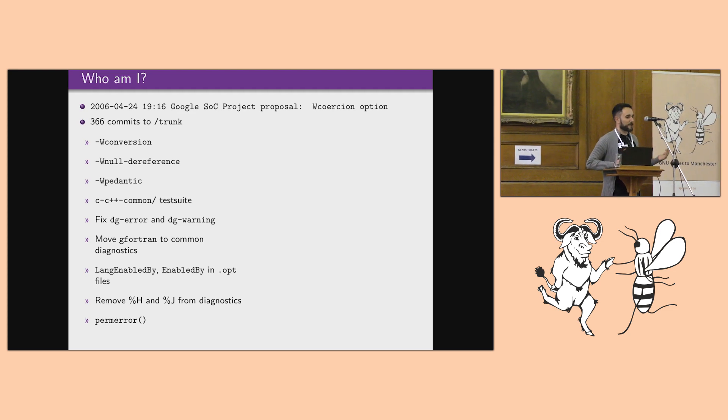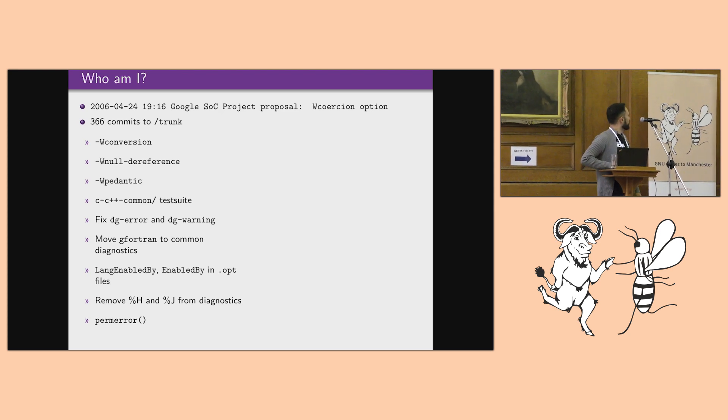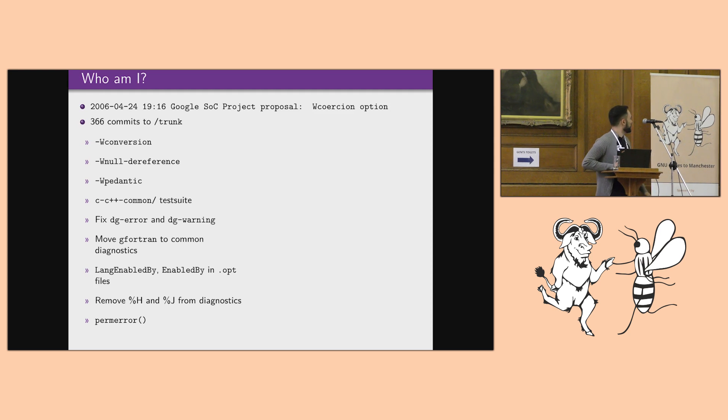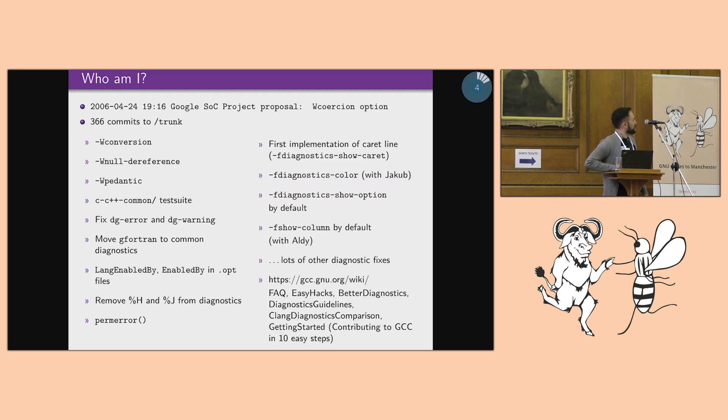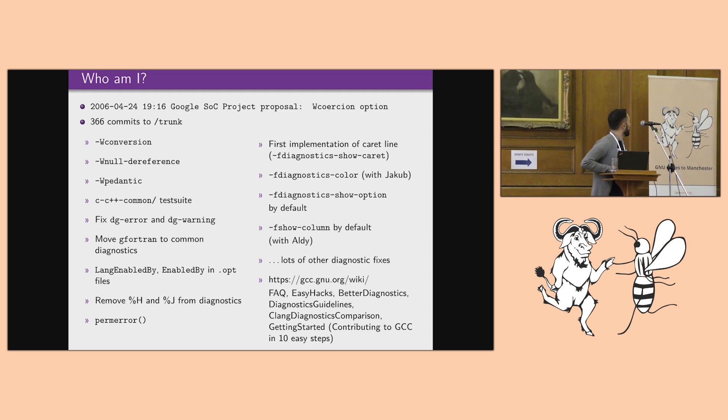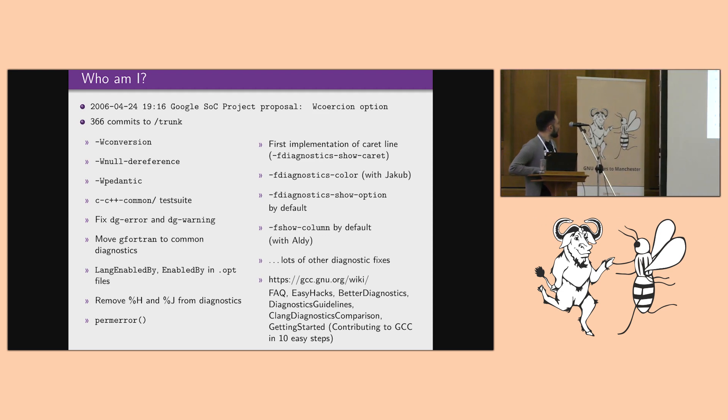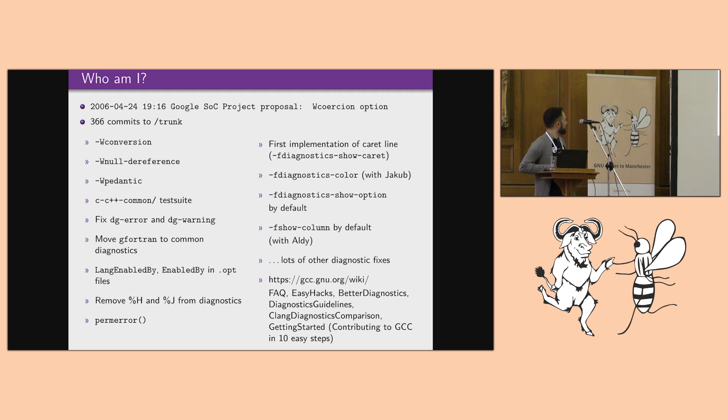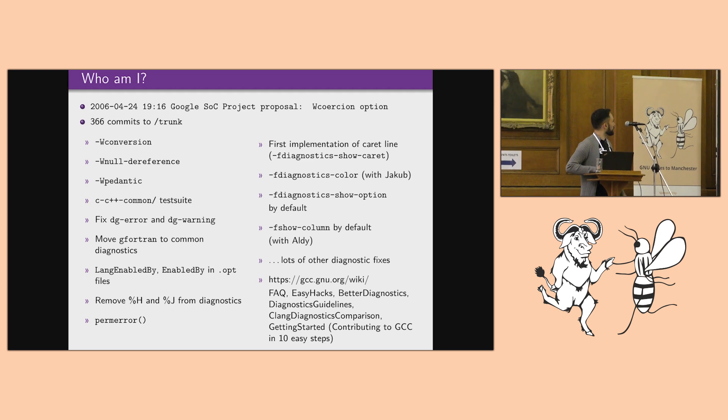Also, maybe you remember when DigiError and DigiWarning actually did the same thing, so there was no difference. I worked a bit on that. I also worked in moving G Fortran to use the common diagnosis machinery, also implemented this LANC enabled and enabled by options in the OPT files and some things like the first implementation of the correct line, which David then vastly improved, and also together with Jakub implementing colors in the diagnostics, fighting with some people about having options, the warning options shown in the diagnostics by default, and with help from Aldi having the default being showing the column numbers and other things.